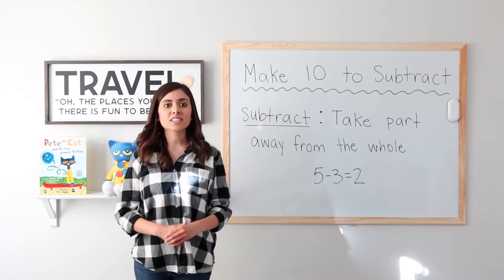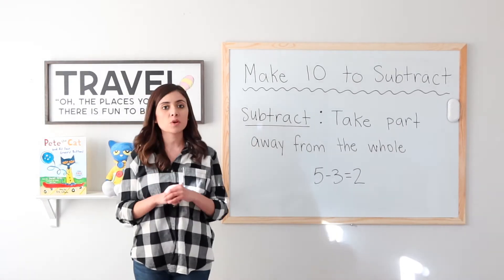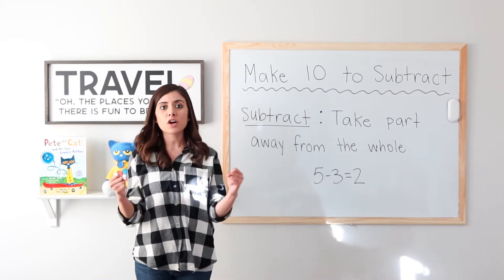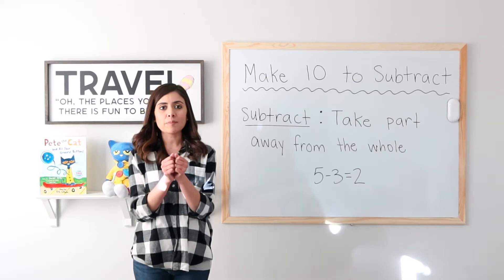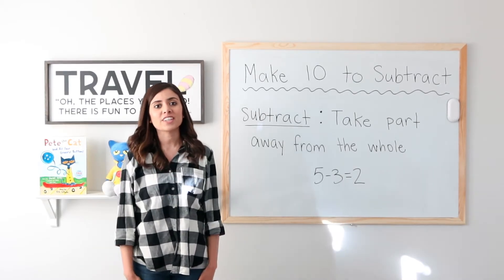Before we get into the lesson, let's remember that subtract is to take part away from the whole. So I have a whole and I separate it into part, part. Here I have 5 minus 3 equals 2. I started with 5 and separated into two parts, 3 and 2.